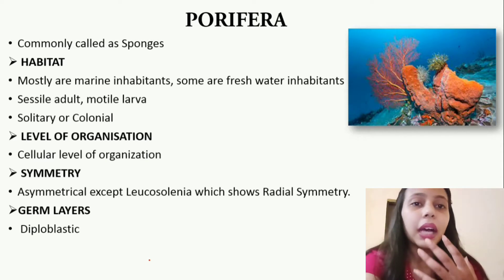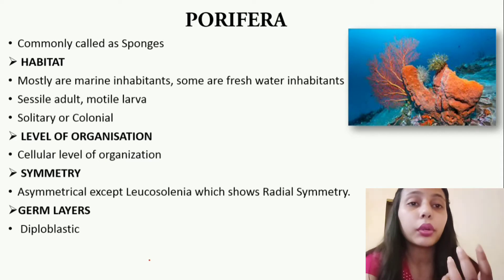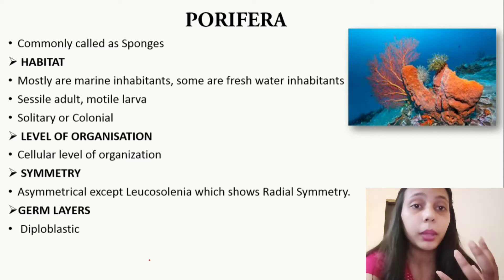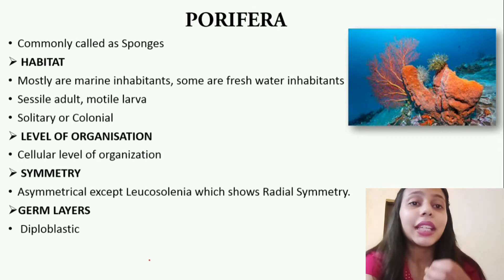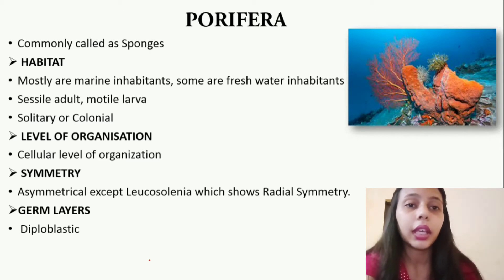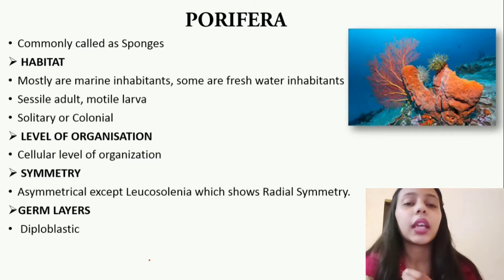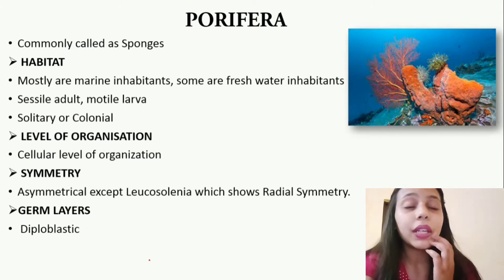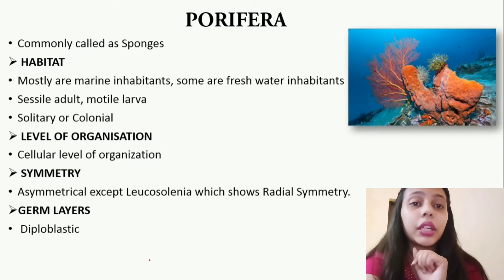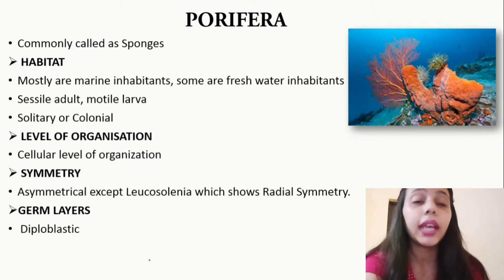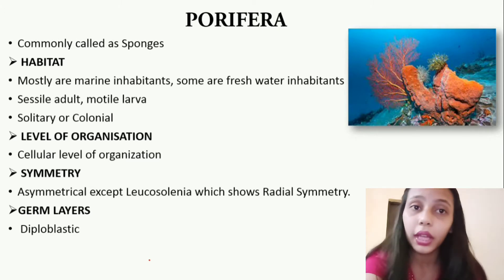Germ layers की बात करें — इनकी body जब develop हो रही होती है, embryo से एक proper body बन रही होती है, तो इनके जो cells होते हैं वो layers में arrange हो जाते हैं। इनकी body में सिर्फ दो layers बनते हैं, इसलिए इन्हें कहा जाता है diploblastic. I hope ये terms आपको पिछले video से बहुत clear होंगी — अगर नहीं हैं तो please go watch that video first.